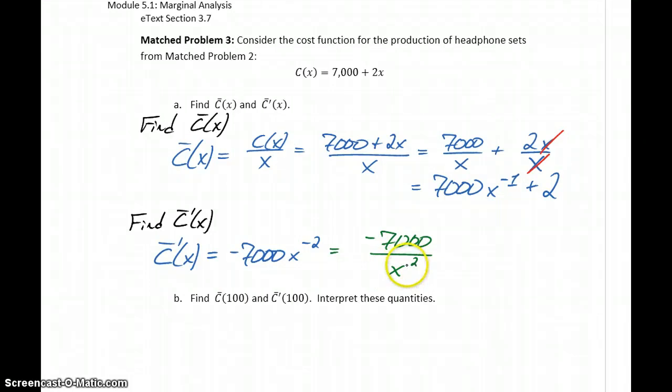Or we could similarly write that as negative 7,000 over x squared. I think for most of the homework problems they're typically looking for an answer to be in this form. When it comes to exam time I'm more than happy with that answer. These two things are completely identical.